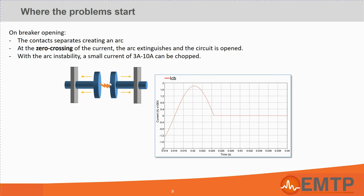Because of the arc and instability around the zero crossing, a small current of two amperes can be chopped, which can create even more challenging TRVs. The chopping current magnitude depends on the type of circuit breaker, vacuum, SF6, etc., and the topology of the network around.